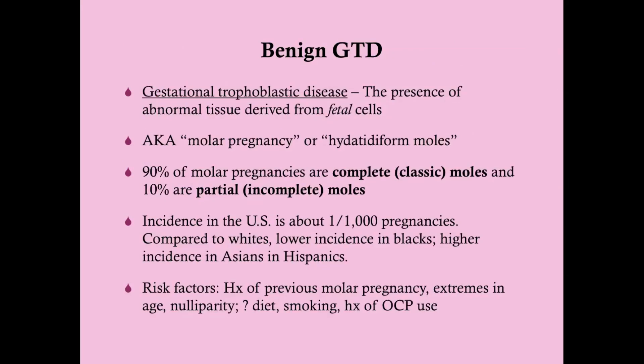GTD is the presence of abnormal tissue derived from fetal cells — a process derived from fetal tissue requiring fertilization of an egg, after which that tissue differentiates into abnormal tissue. This is also known as molar pregnancy, or in older literature, hydatidiform moles. 90% of molar pregnancies are complete or classic moles, and 10% are partial or incomplete moles. The incidence in the U.S. is 1 in 1,000 pregnancies. Compared to whites, it has a lower incidence in blacks and a higher incidence in Asians and Hispanics.